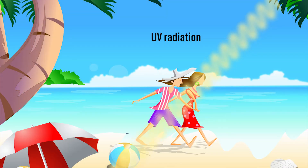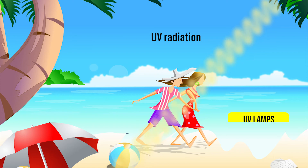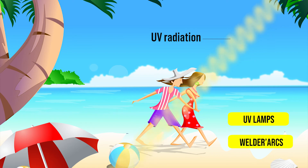The main source of ultraviolet radiation is sunlight. Others are UV lamps and welder's arcs.